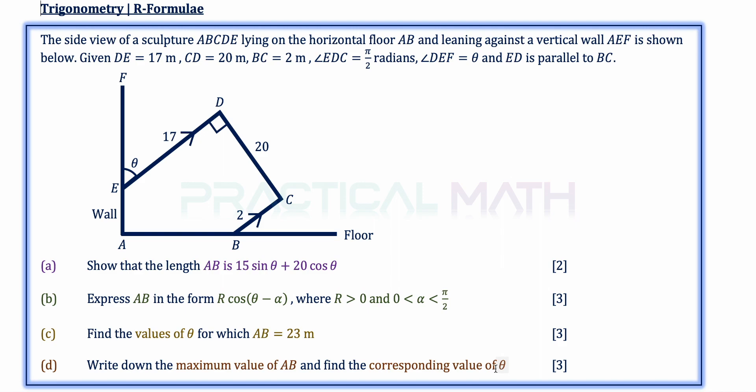Find the values of theta for which AB is 23 meters. In the final part of this question, write down the maximum value of AB and its corresponding value of theta. You might want to pause this video to give this question a try, and when you are ready, keep watching.